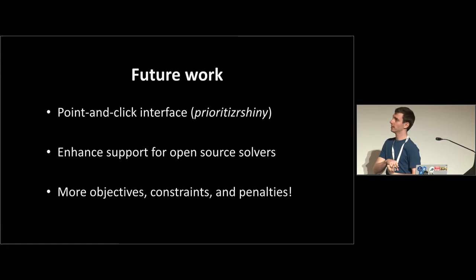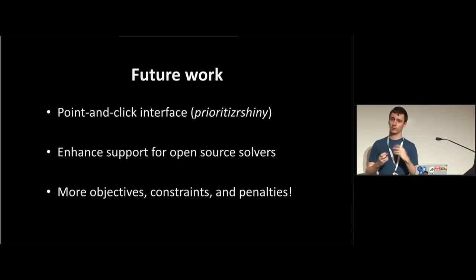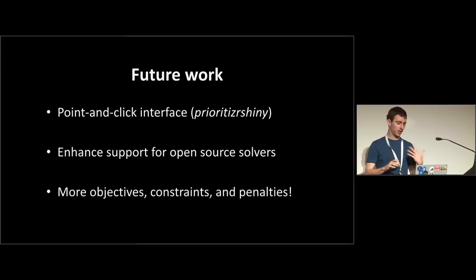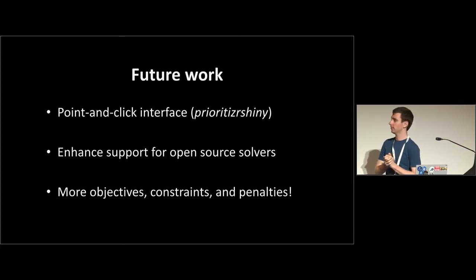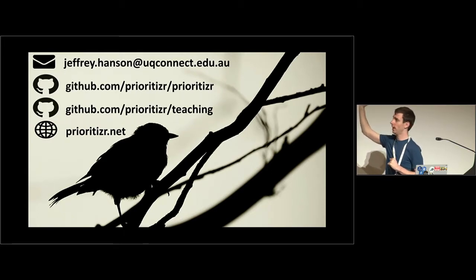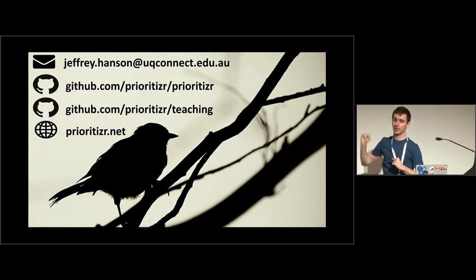So what are we looking to do next with Prioritiser? We're working on a Shiny interface — Richard Schuster is leading development on that. A lot of the really cool stuff for Prioritiser requires commercial solvers like Gurobi, so we're looking to see if we can make the open source options quicker. We're always looking to add more customization: more objectives, constraints, and penalties. If anyone thinks something is missing, please post an issue on GitHub or email me. There's a GitHub repository, a teaching repository with workshop materials, slides for this talk, and a package-down website.